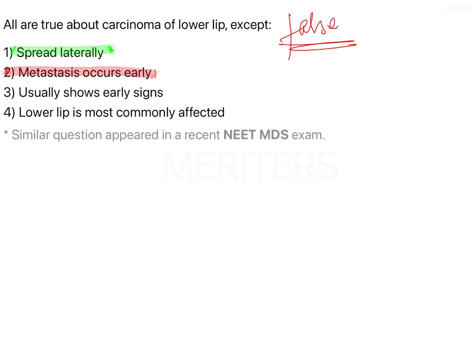'Usually shows early signs' — this is actually the reason carcinoma of the lip has a good prognosis. The lip is visible on the face, so an ulcer is going to be easily noticeable by the patient as well as people around them. As a result, the patient seeks treatment as soon as they notice the ulcer, which is why early signs help in easier management and extremely good prognosis.